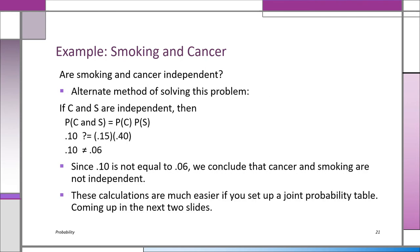Here's another way to test the same problem. If C and S are independent, then P(C and S) should equal P(C) × P(S). We check: P(C and S) = 0.10. Is that equal to P(C) × P(S) = 0.15 × 0.40 = 0.06? No — 0.10 ≠ 0.06. Right away we know cancer and smoking are not independent.